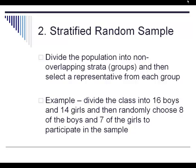Stratified random sample: you divide your population into non-overlapping groups and then select a portion from each group. For example, if you divided your class into boys and girls and then selected half of the boys and half of the girls to participate, that would be a stratified random sample because you're first grouping them and then picking a portion of each group.